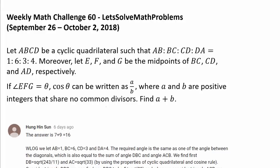Let A, B, C, D be a cyclic quadrilateral such that AB to BC to CD to DA is 1/2 : 6/2 : 3/2 : 4.